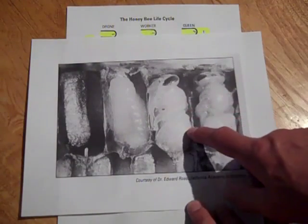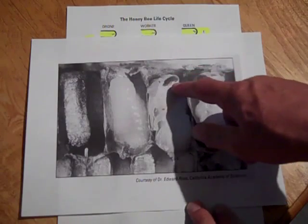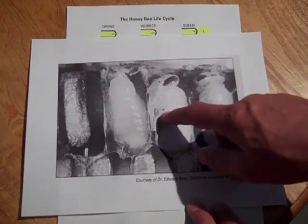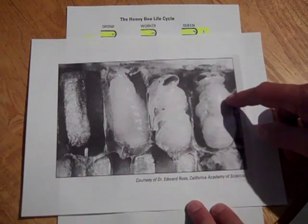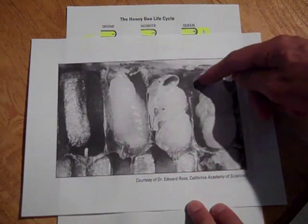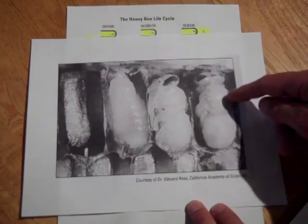And now these are pupas. You can see the head has been formed, you can see the eyes there, the antennas and the feet. Here's, this is like a side view. Here's looking down with the head and the eyes and the thorax and the abdomen.